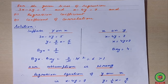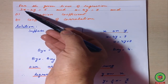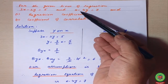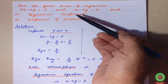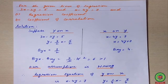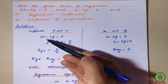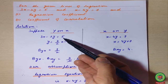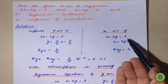I am taking one or two examples to make the concept easy. For the given lines of regression, suppose we have the equations 3x − 2y = 5 and x − 4y = 7. We have to find out the regression coefficients and the coefficient of correlation. According to step one, we write down the equations by partition — on one side we assume y on x with equation 3x − 2y = 5, and on the other side x on y with equation x − 4y = 7.